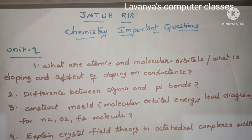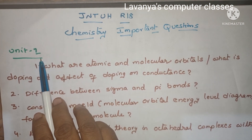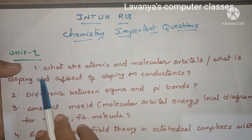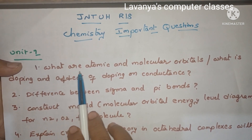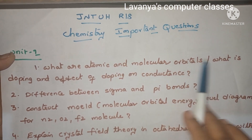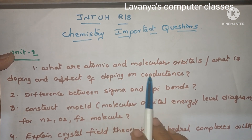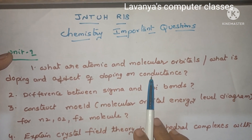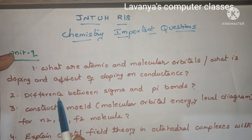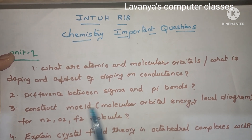First one is Unit 1. In Unit 1, the first important question is: what are atomic and molecular orbitals, and what is doping, the effect of doping, and conductance? The second question is: the difference between sigma and pi bonds.